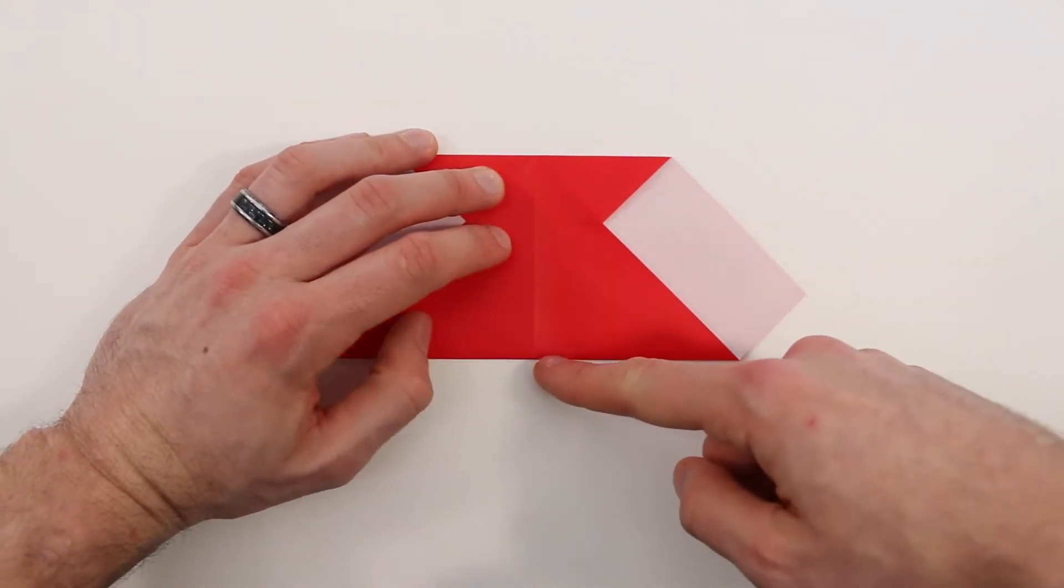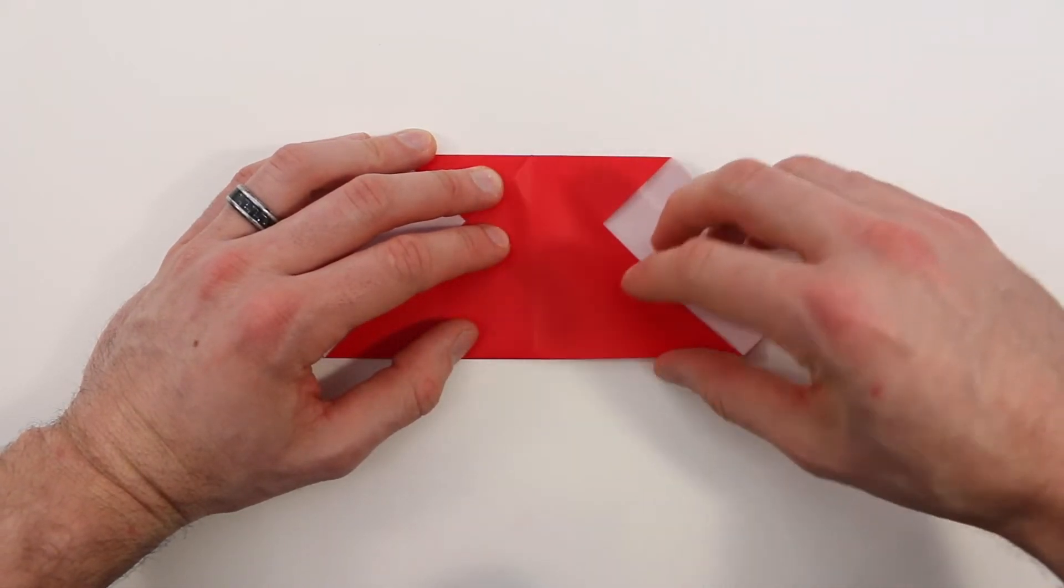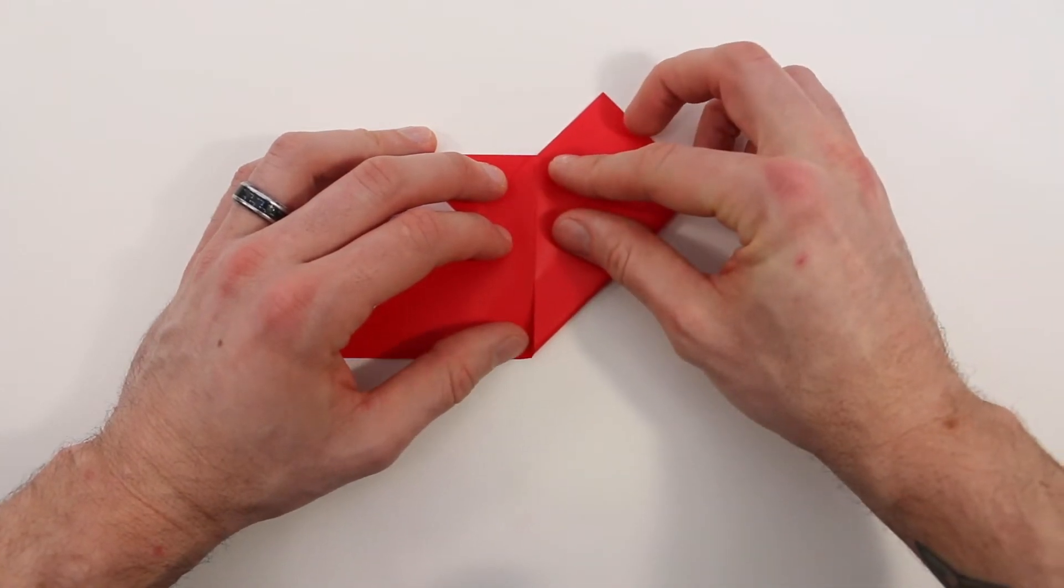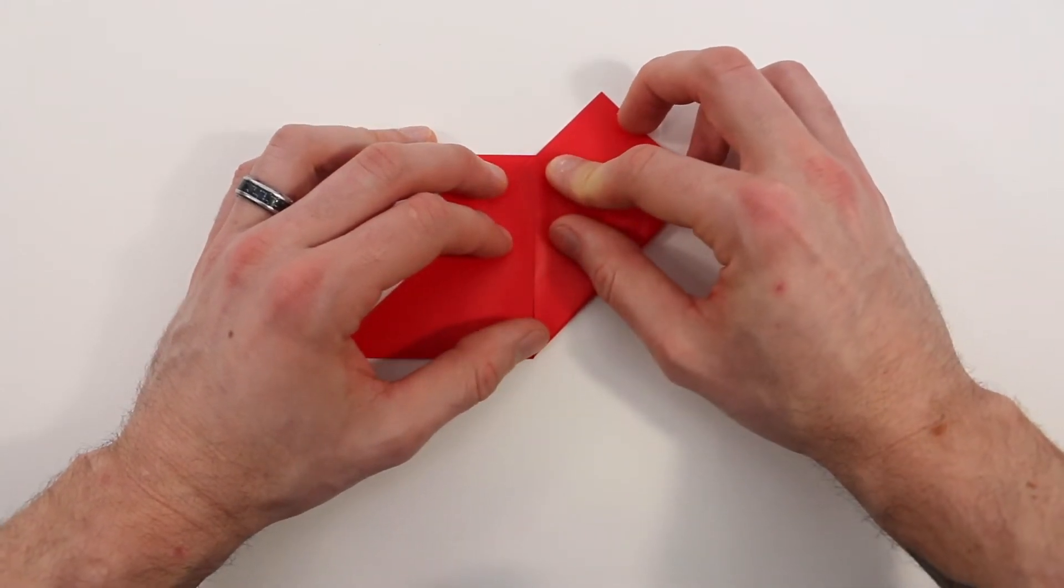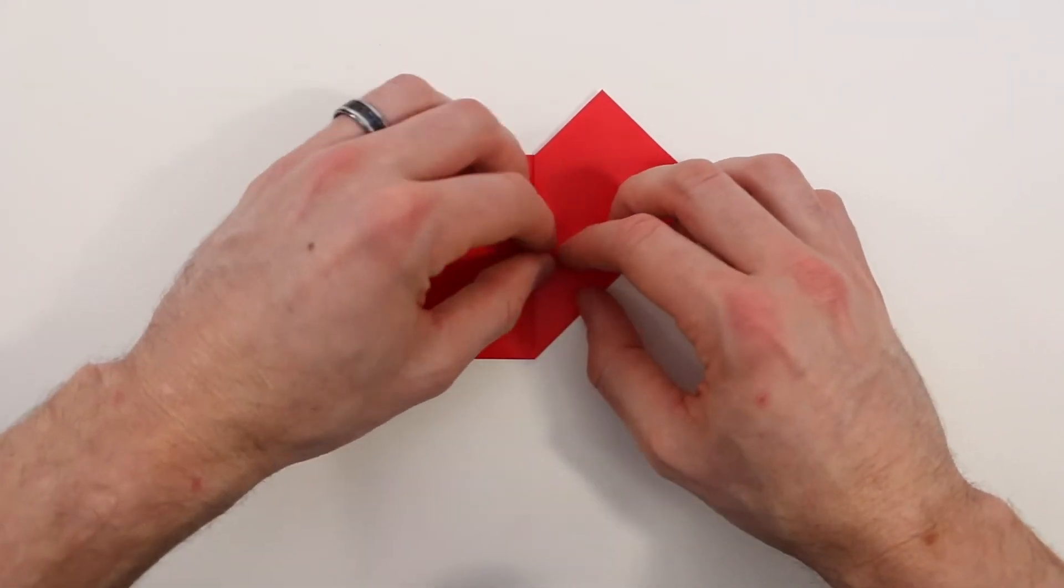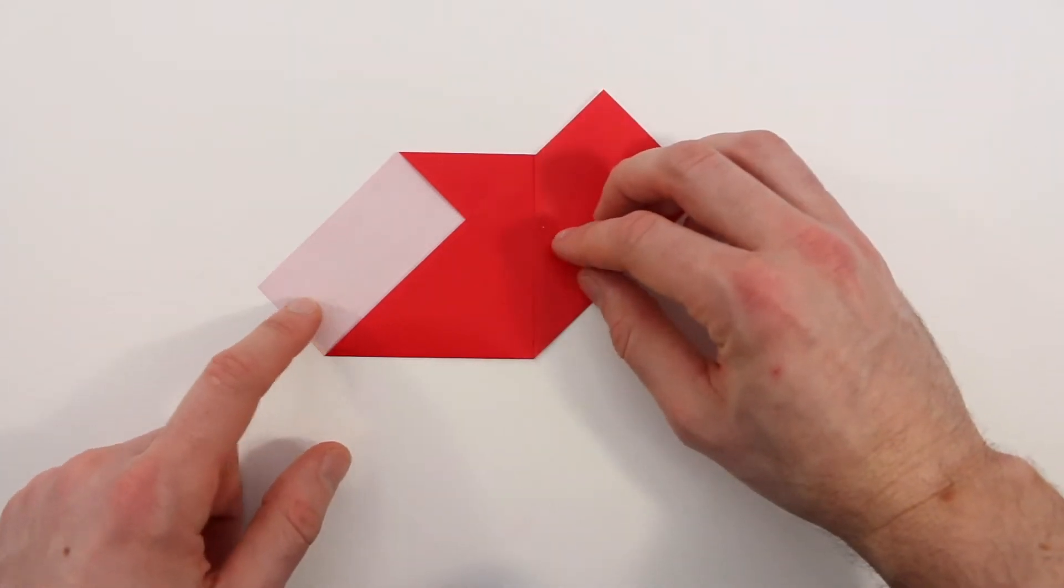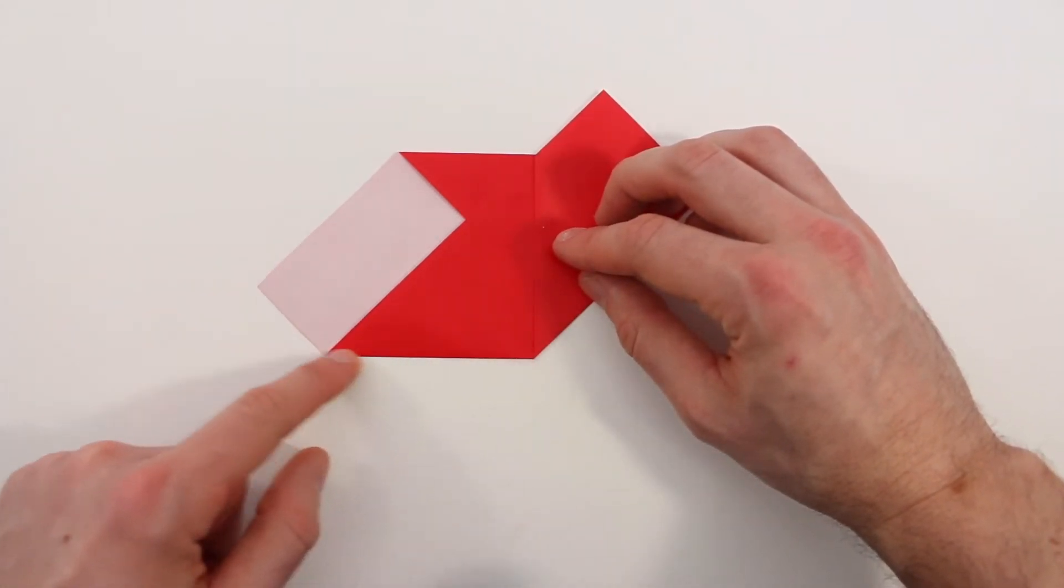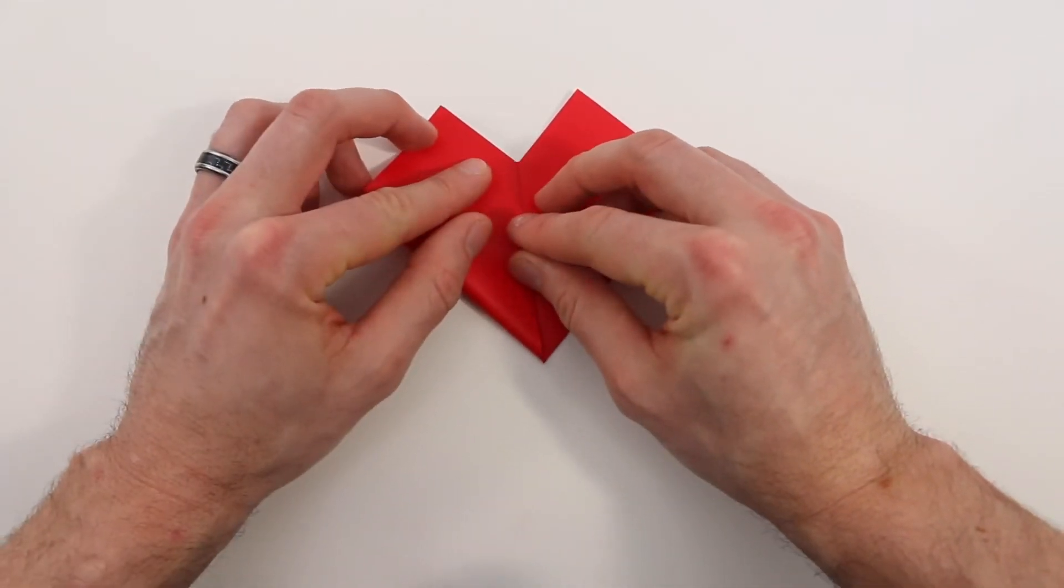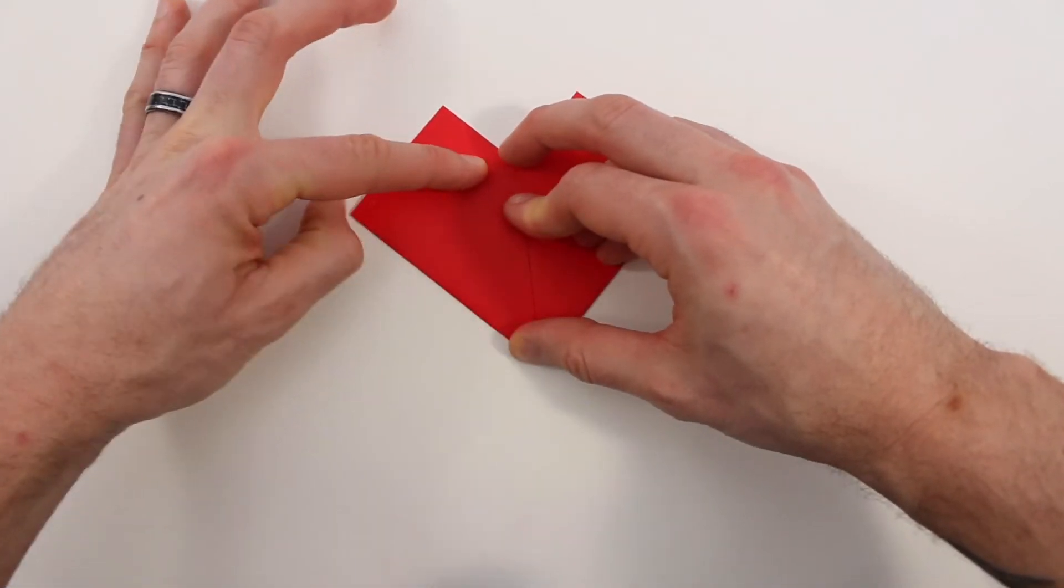Next we're going to bring this bottom edge on the right in to lie along this vertical crease here. So just line that up so it's perfectly in the center, and then crease it. Now we'll do the same thing with the other side, so we'll bring this bottom left edge into that same center crease. Then crease that one.